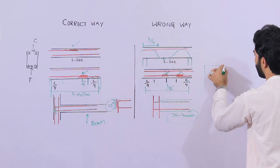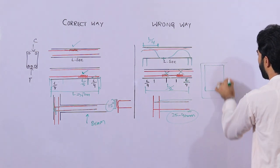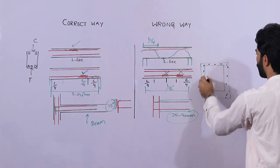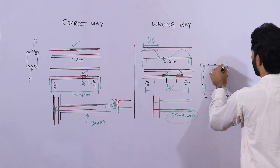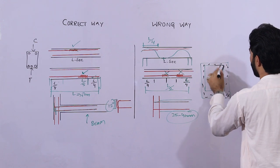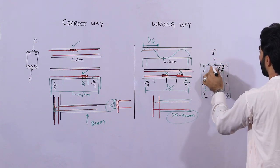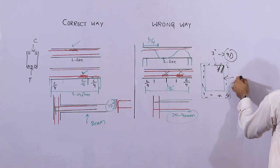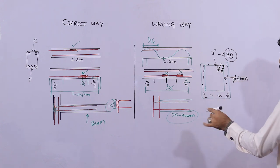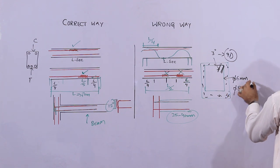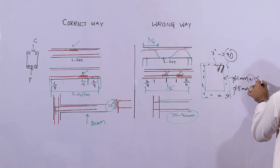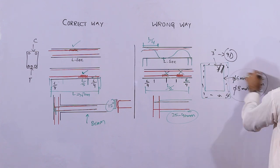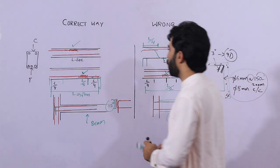Now the main point: stirrups. The concrete cover inside is about 25 to 40 mm. The hooks are very important — the length of the hook should not be less than 3 inches, and you get this from 90-degree bends. The stirrup diameter should not be less than 6 mm for residential buildings, and not less than 8 mm for commercial buildings. The spacing should not be more than 150 to 200 mm — this is also important.